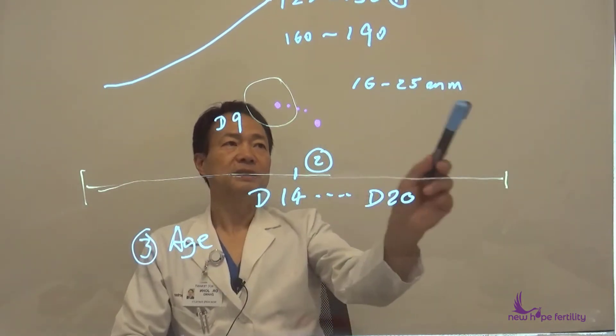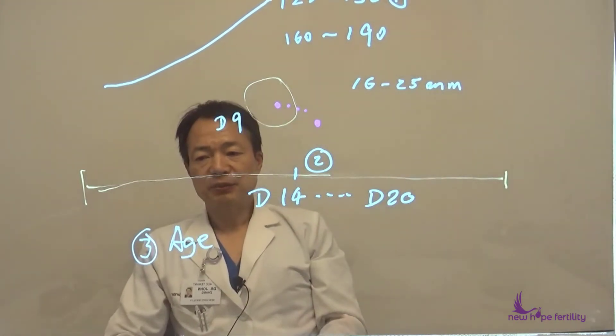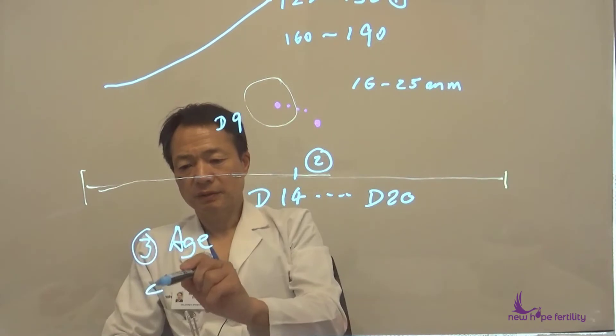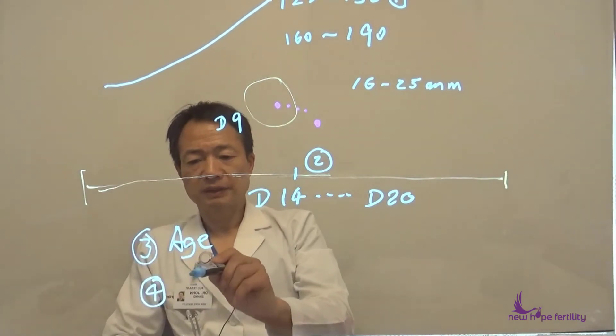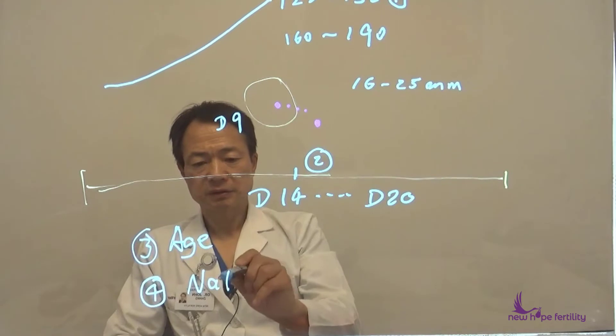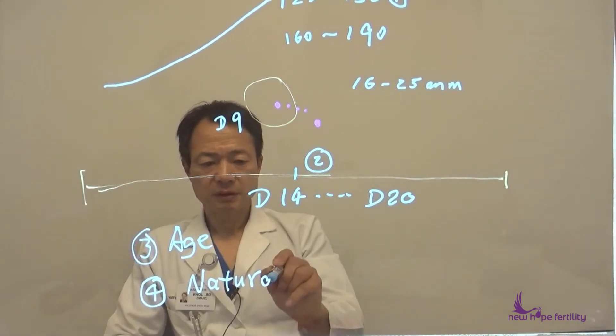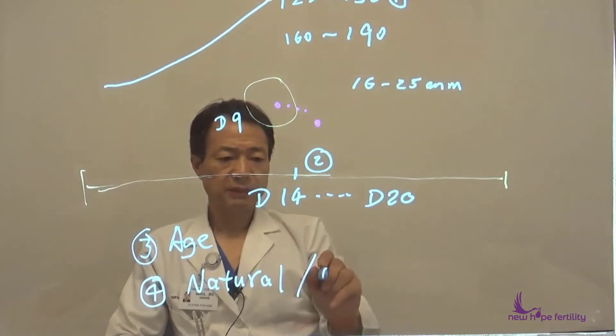So age also determines when to trigger. And number four is whether it was a natural cycle or with medications.